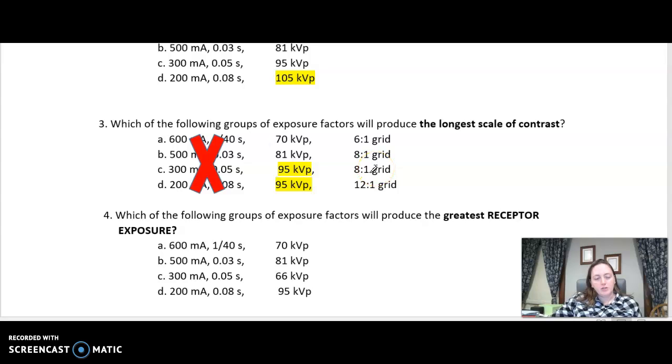So the 12 to 1 grid is going to block more scatter than the 8 to 1 grid. The more scatter on your image, the longer scale of contrast. There's going to be more gray. So the answer for this one is C because it gives me a long scale of contrast with my 95 and it doesn't clean up as much scatter. The 8 to 1 is not as efficient as a 12 to 1 grid.